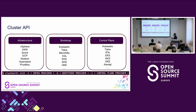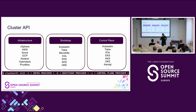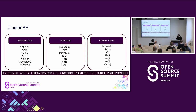Setting up a Cluster API environment is very simple — it's a single command: `clusterctl init`, specifying your infra provider, bootstrap provider, and control plane provider. You can have many infrastructure providers, control plane providers, and bootstrap providers all in the same cluster. Customers often have one cluster from which they manage clusters in multiple clouds in a unified manner, without needing separate management per cloud.